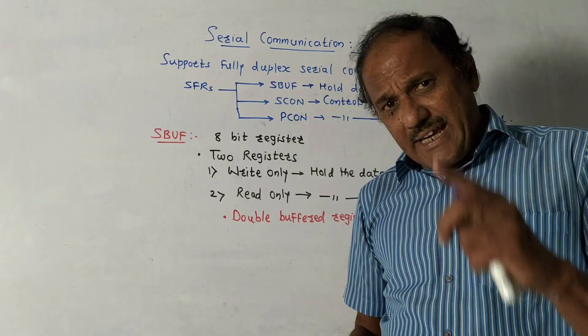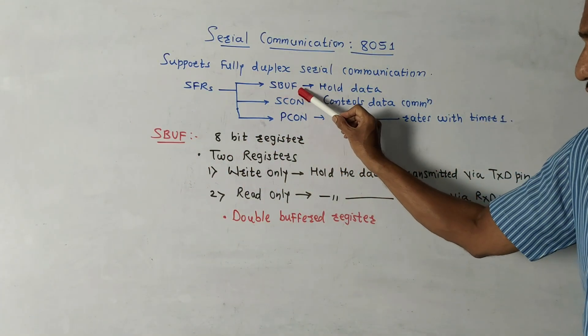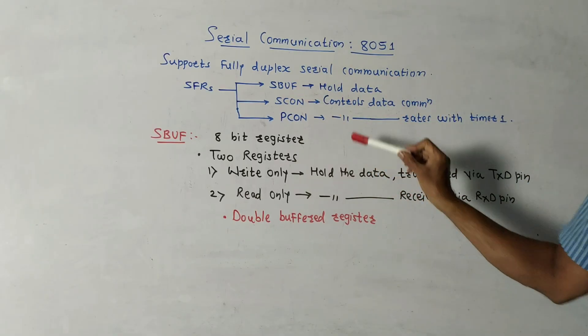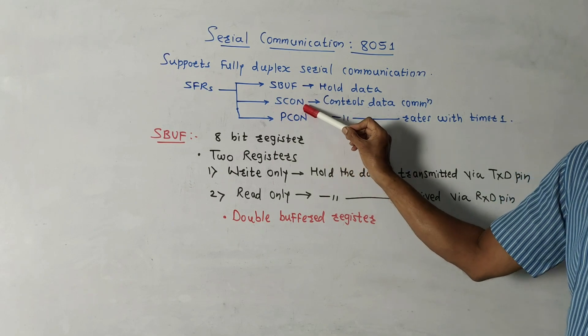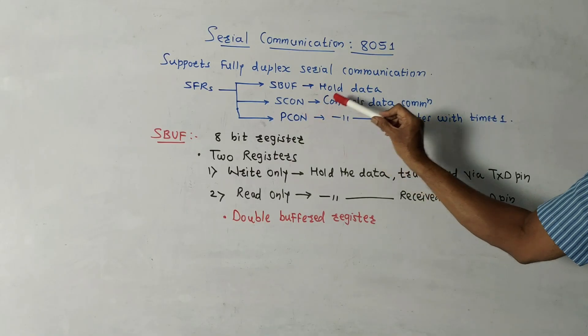To perform this operation, three special function registers are used. One is SBUF, that is serial buffer register. It is used to hold the data. Second is SCON, that is serial control register. As the name indicates, it is used to control the data communication while transmission as well as reception.